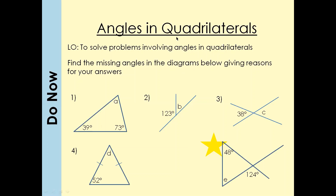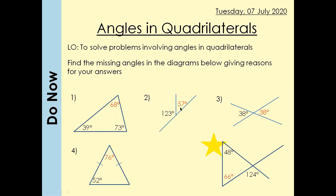Let's look at the answers. The angles in a triangle add up to 180°. Angles on a straight line also add up to 180°, and these are called supplementary angles. Now, this angle equals this angle — that is what you call a vertically opposite angle.